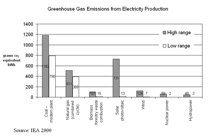Their paper reports that wind energy has a mean value of 34.11 grams of CO2 EQ per kWh and solar PV a mean value of 49.91 grams of CO2 EQ per kWh, with the minimum for wind being 0.4 grams and the maximum 364.8 grams, and a minimum for solar PV of 1 gram and a maximum of 218 grams.